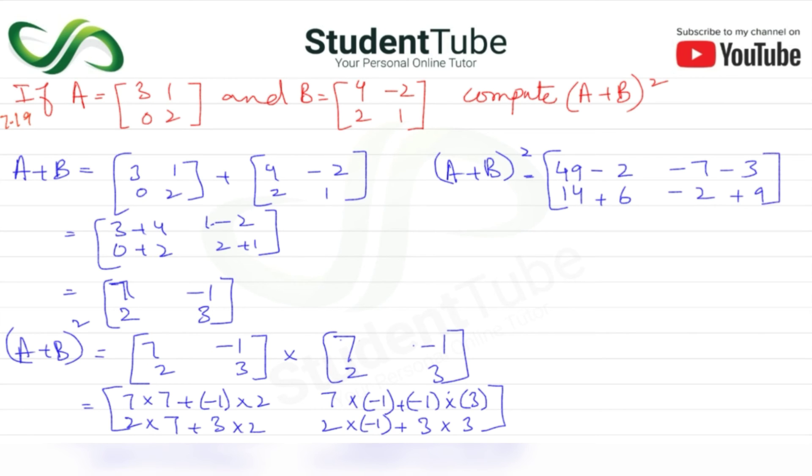49 minus 2 is 47, minus 10, this is 20, and 5. The answer is [47, -10; 20, 5].